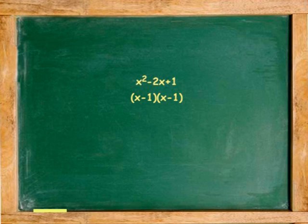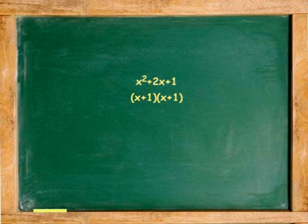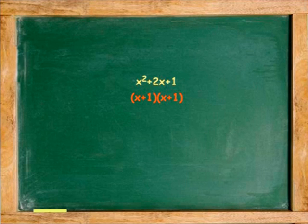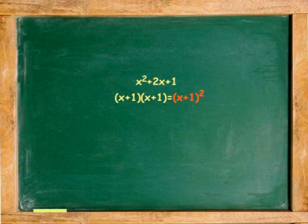Because the middle term is addition, the first example x² + 2x + 1 is factored as (x + 1)(x + 1). Because both binomials are identical, this is written as (x + 1)².